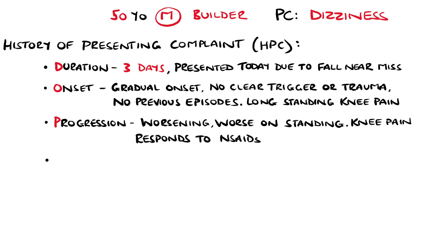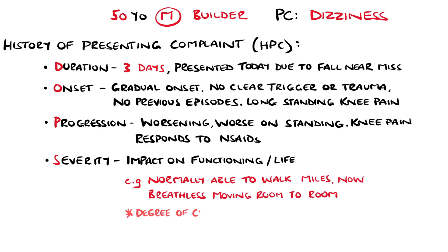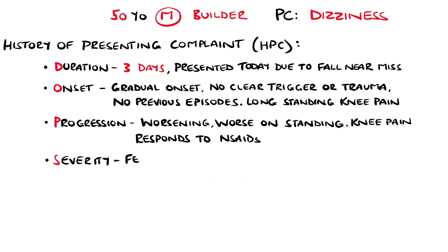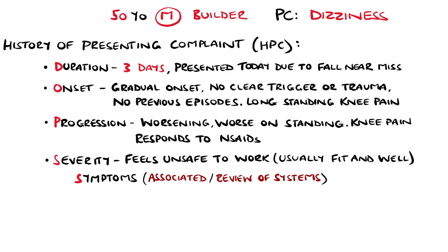That brings us to S in the DOPS mnemonic — how severe is the problem? How does it impact daily functioning? In our patient, the dizziness is making them a risk for falling, a large difference from normal. Another example could be with shortness of breath, where a patient's normal exercise tolerance is to walk several miles, whereas now they are breathless moving room to room — the change from baseline can help determine severity. We'd also want to know about associated symptoms. Generally this is a gateway to do a review of systems, and to ask about broadly related symptoms. The review of systems is useful because by asking questions on seemingly unrelated systems, we might find features that are relevant to us but did not seem so to the patient, and so they did not mention them.